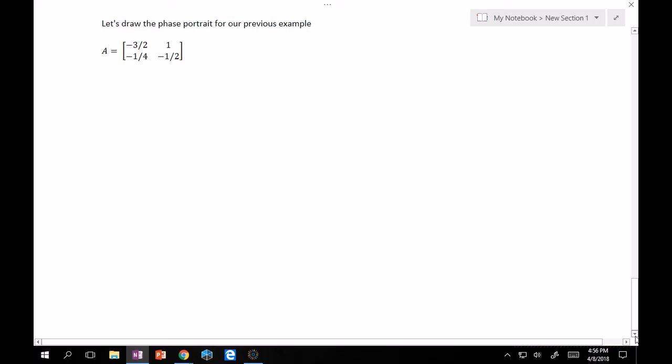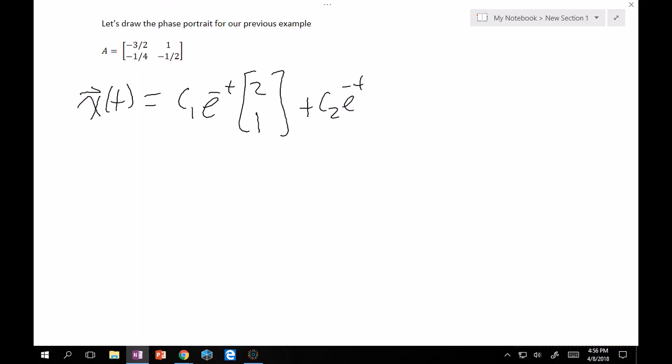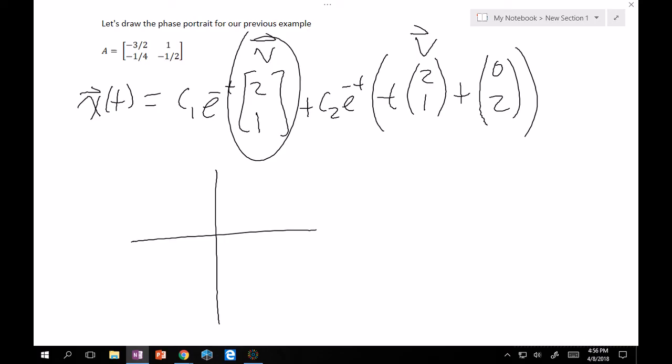So, remember, our general solution for here was x of t is equal to c1e minus t times 2, 1 plus c2e minus t times t, 2, 1 plus, what was it, 0, 2? That was our W vector. Okay, so that means this is our eigenvector. And so, this is the line that we have to draw. So, our phase portrait here, we draw 2, 1. So, that's over 2, up 1. They meet right here. Go through the origin like that. Yeah, there we go. And then, put the trajectory on here.